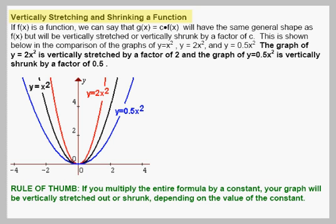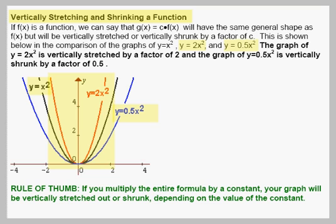This next rule is for vertically stretching and shrinking a function. Starting with y equals x squared — graphed in black with vertex at (0, 0) — if we put a 2 in front of the formula we get y equals 2x squared. We get the same general shape, but the graph in red is stretched out by a factor of 2. If we multiply by 0.5, giving us half times x squared, we get the graph in blue — same general shape but vertically shrunk. Multiplying the formula by a coefficient vertically shrinks or stretches the function.